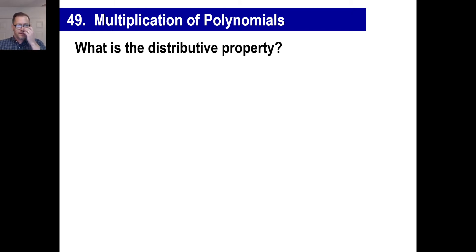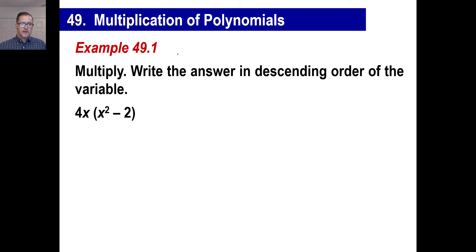First, the question is: what is the distributive property? The word distribute means to kind of spread something around. And that's what we're going to do when we multiply polynomials. We're going to multiply the 4x by everything in parentheses, one at a time.